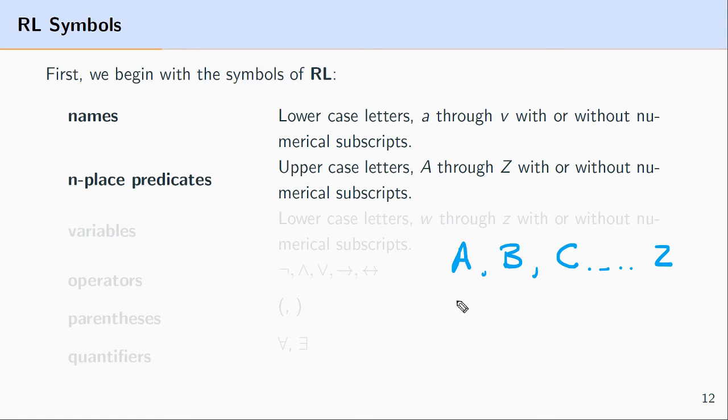In addition, since we want an infinite number of n-place predicates at our disposal, we'll allow for A sub 1 to be an n-place predicate, B sub 2 to be an n-place predicate, C sub 50 to be an n-place predicate, and so forth and so on.